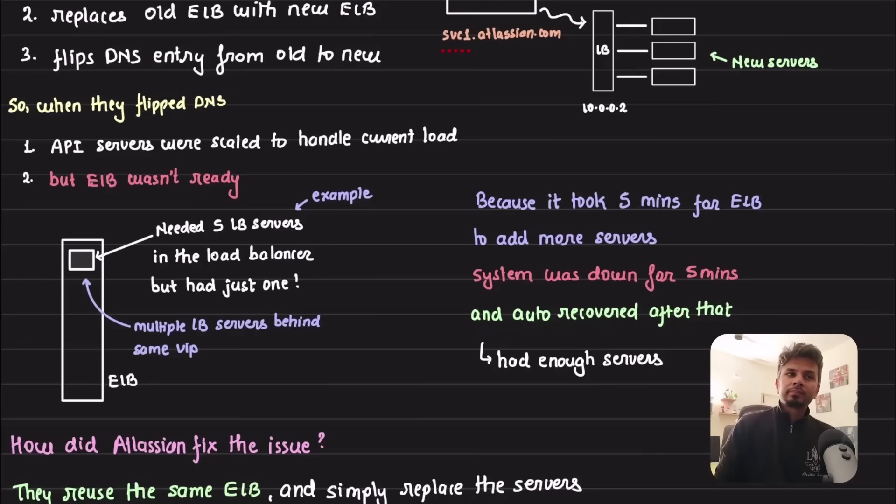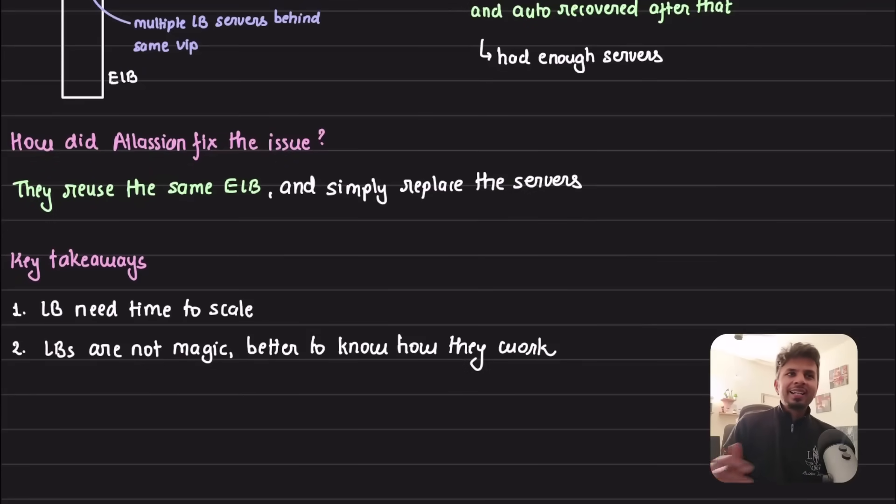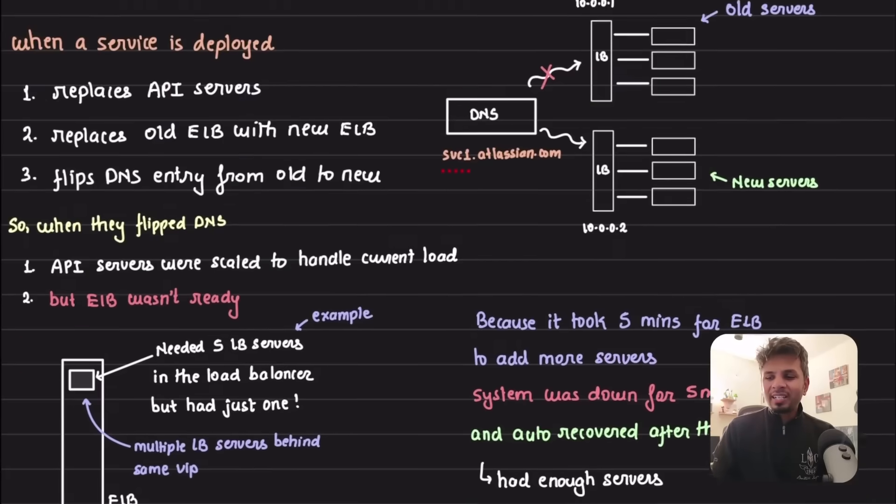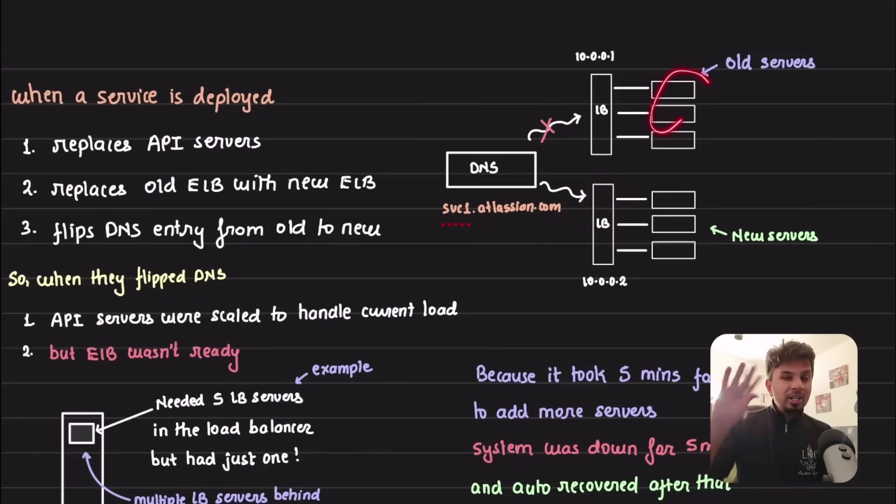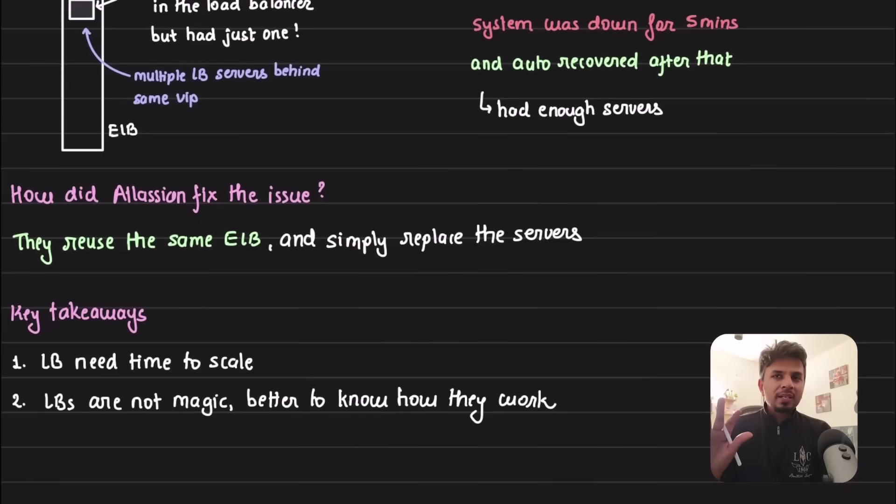What's the fix? It's simple. They started reusing the same load balancer and they simply replaced the servers. They kind of moved from a blue-green deployment of completely replicating their infrastructure to a rolling deployment where they simply roll out the old server and replace it with the newer one. Pretty simple fix, no complication, and they never saw the error again.